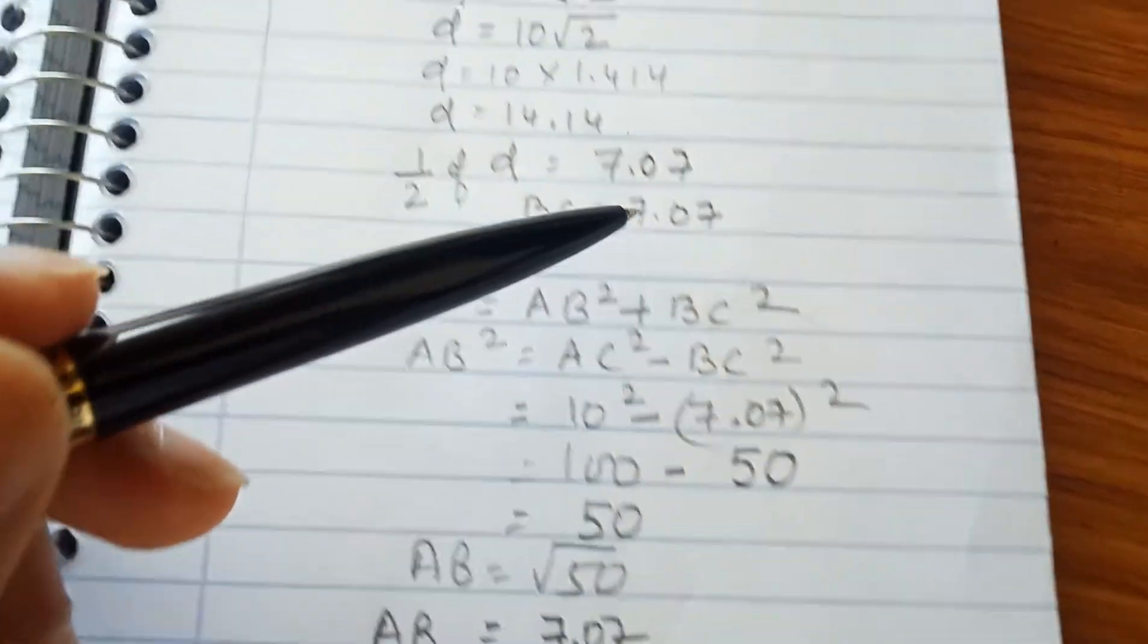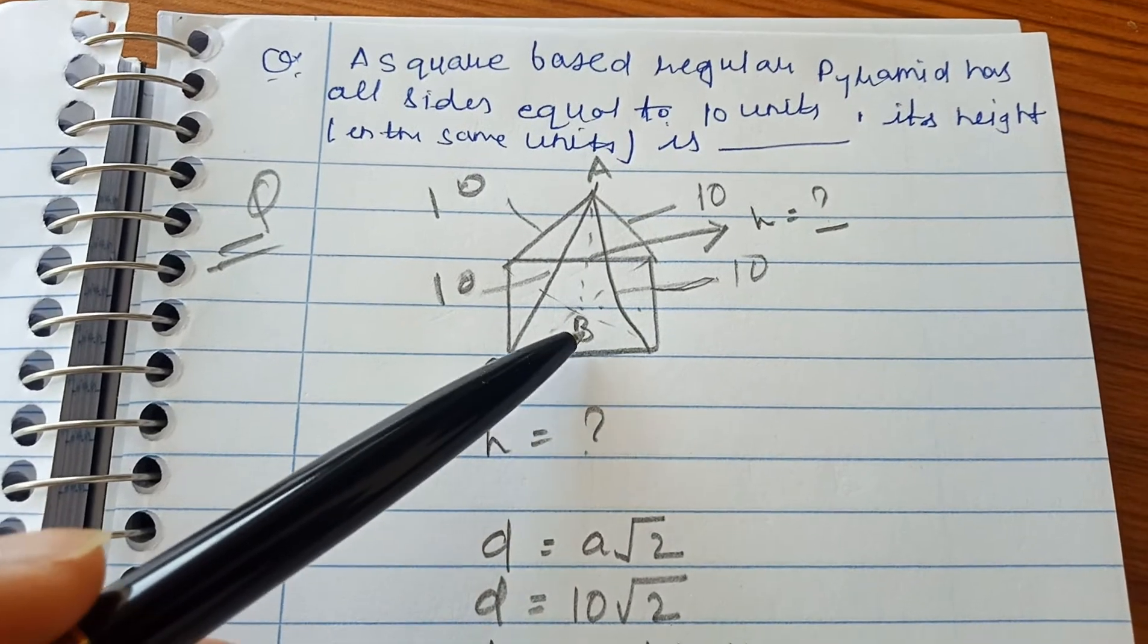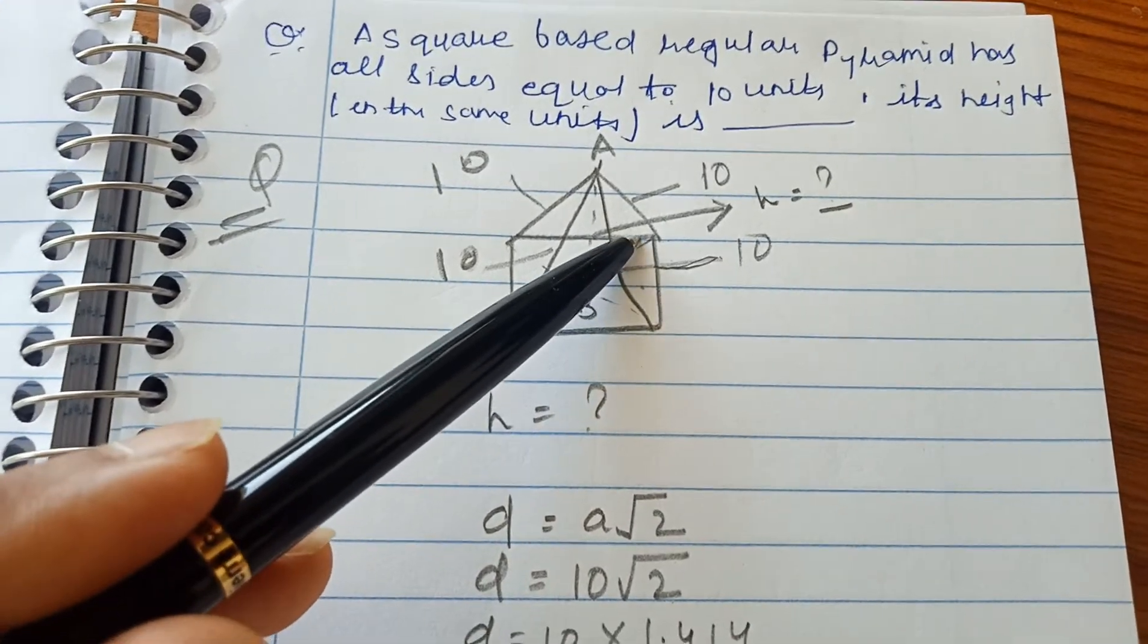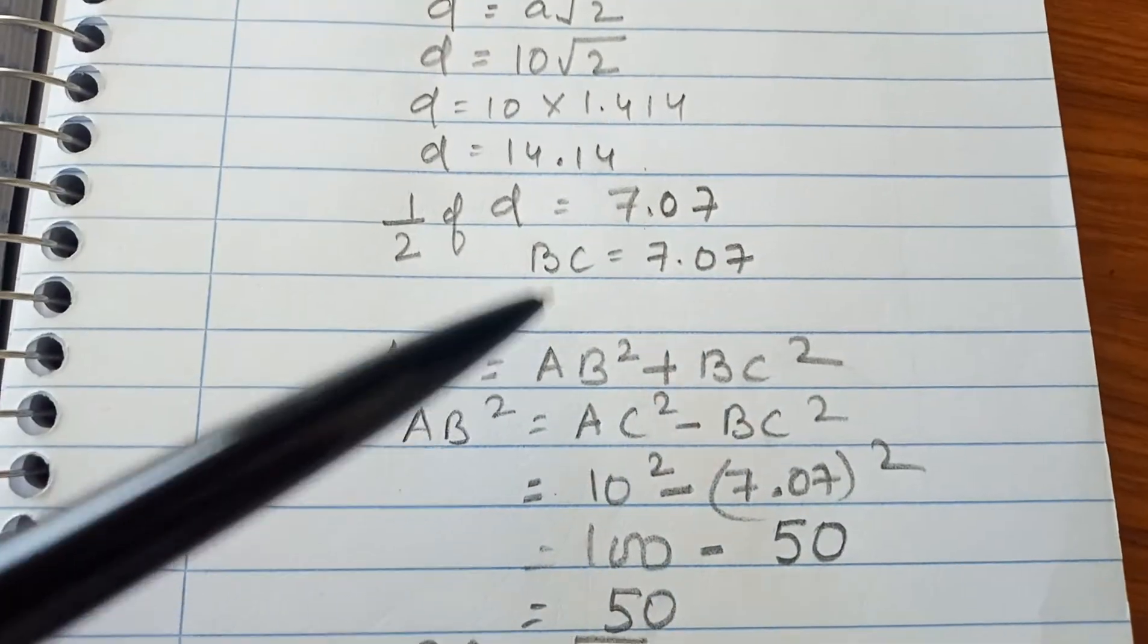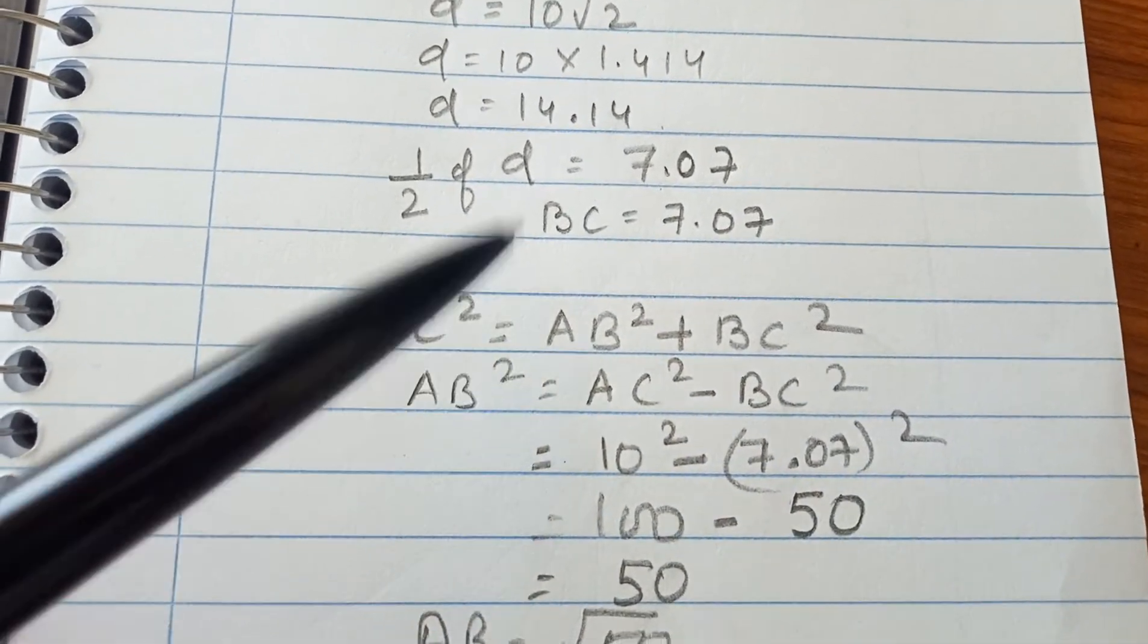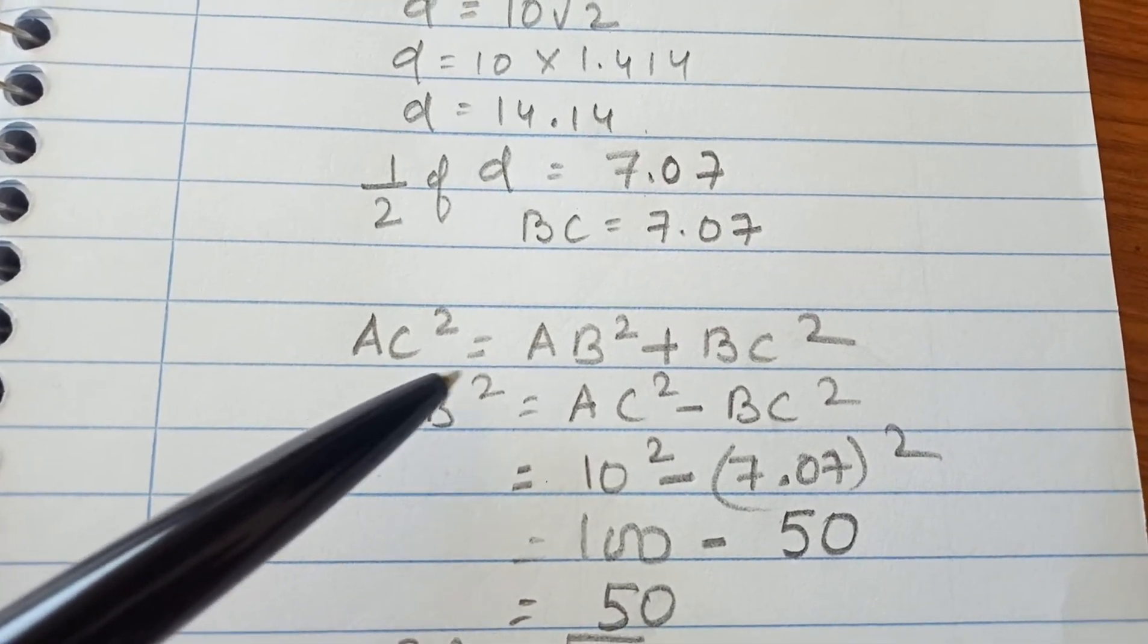So we have found that BC is equal to half of this diagonal part. After finding BC, we will use the Pythagorean theorem: AC² = AB² plus BC² in this triangle ABC.